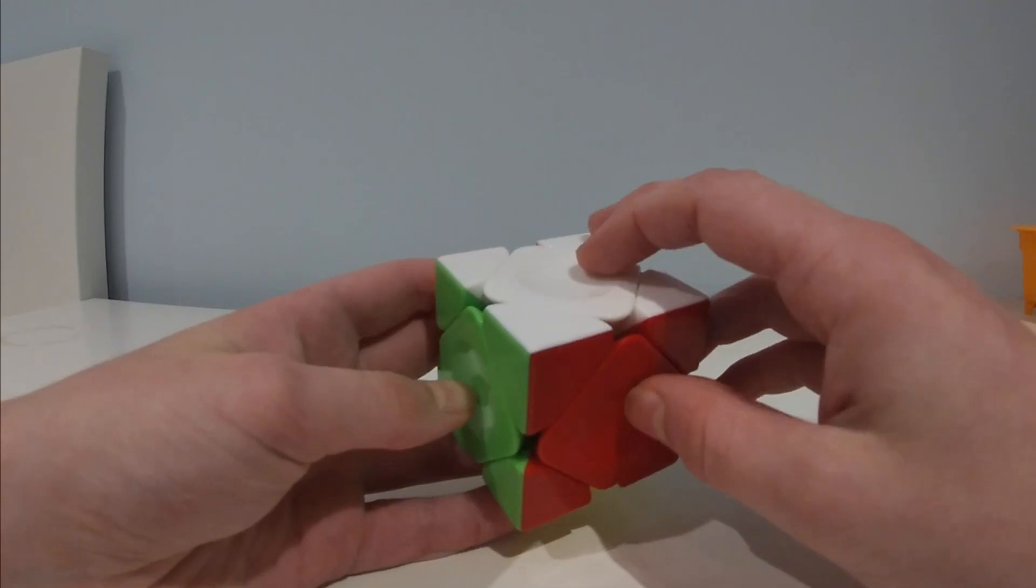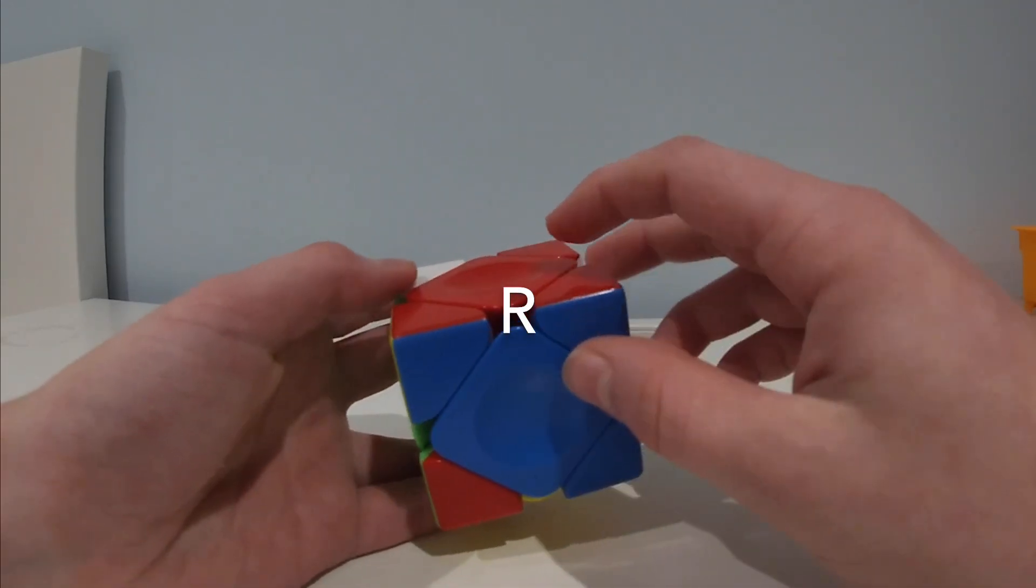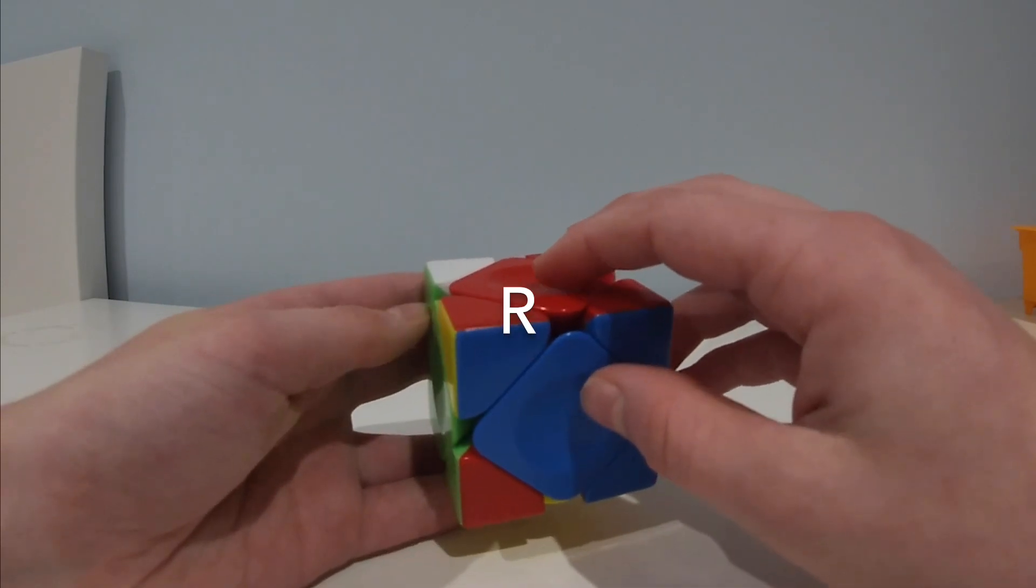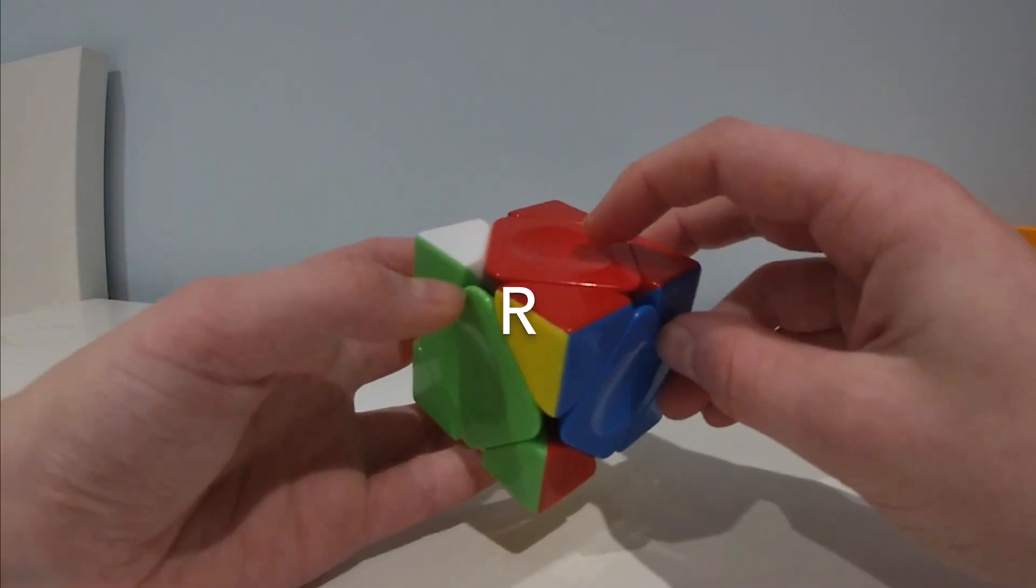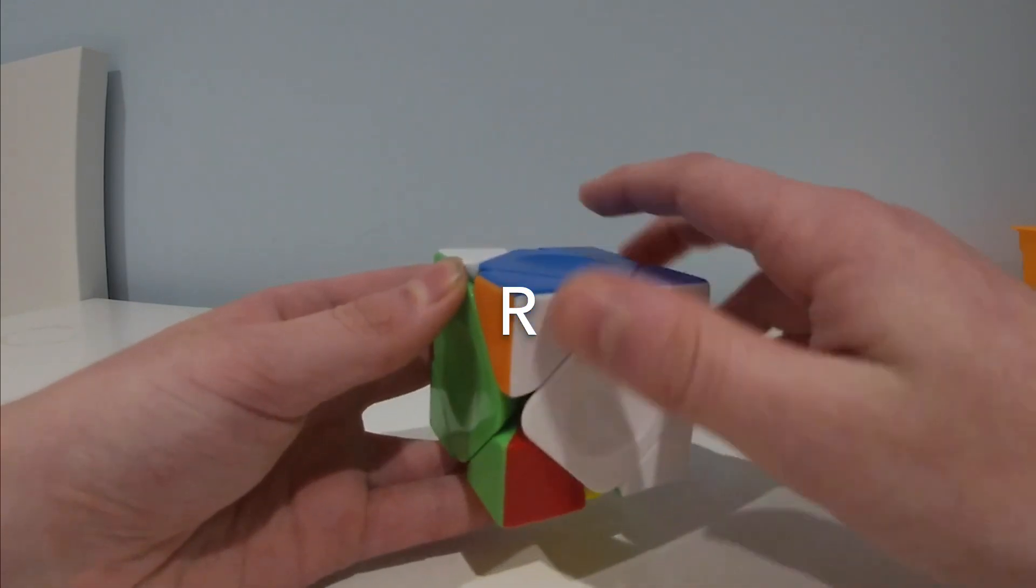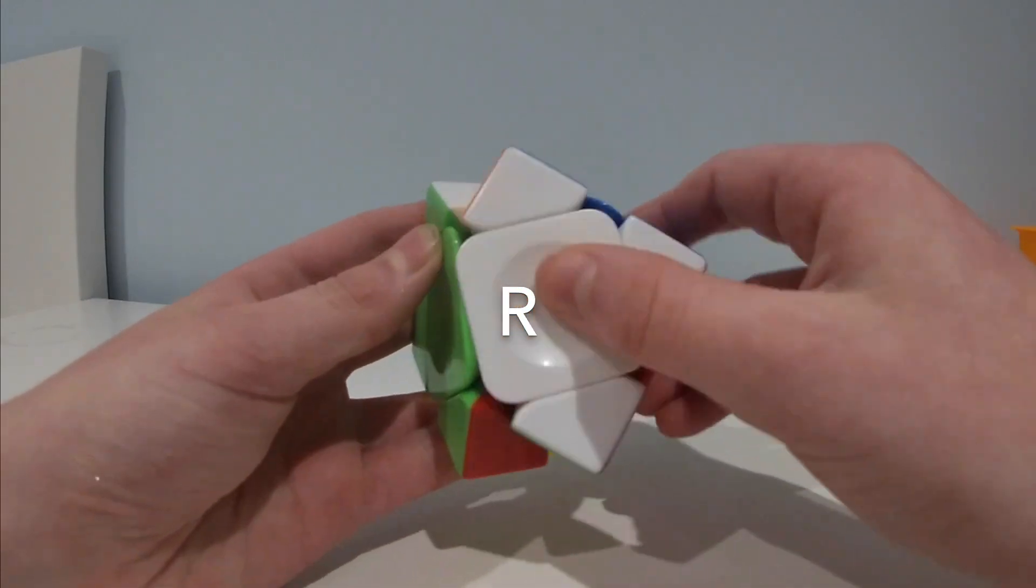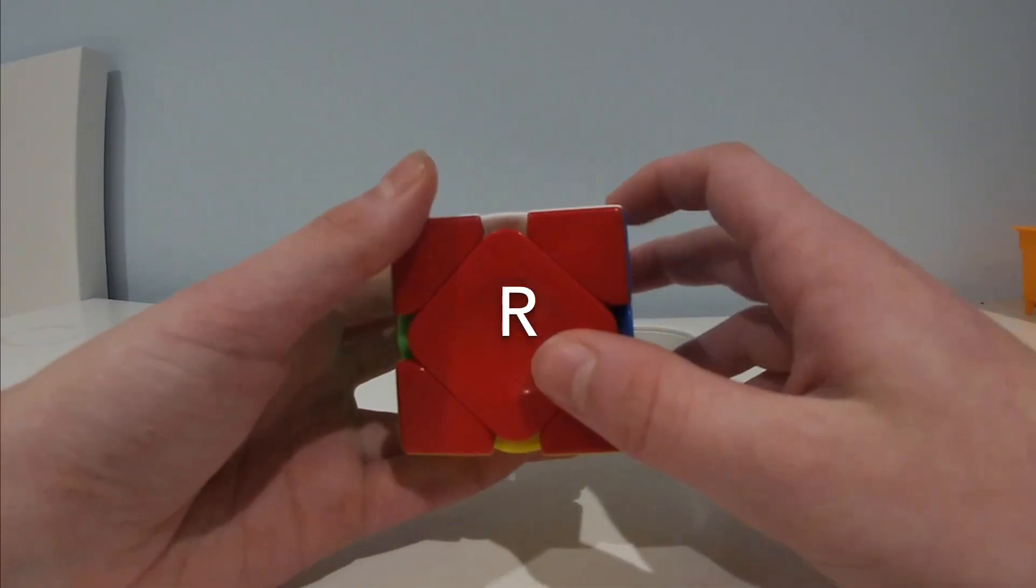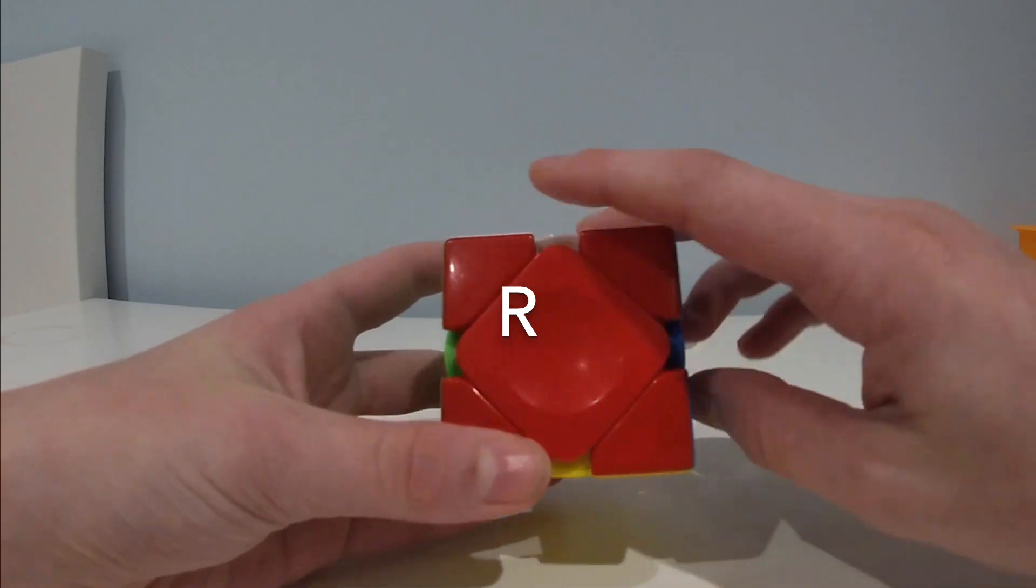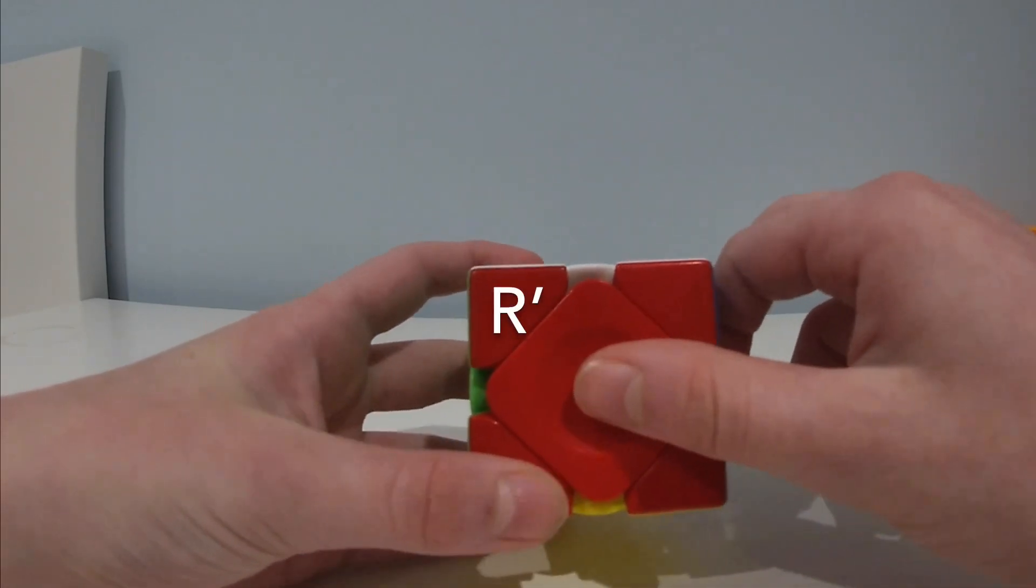So the first one you need to know is R. R turns around this corner, the right corner, in a clockwise direction. With the cube facing towards you it looks like this. And R prime just goes the other way.